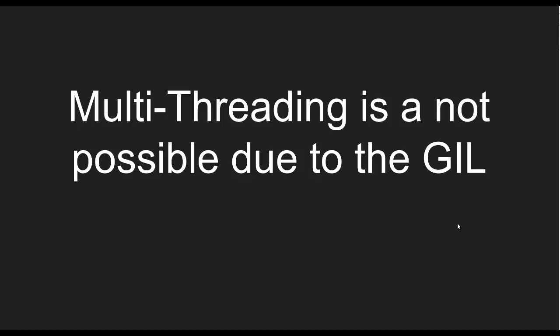This goes back to when Guido was designing the language. He used the GIL to make Python thread-safe because Python's core C-based memory management is not thread-safe at all. Without the GIL, you could have race conditions on multiple threads — Python could be trying to update two pieces of memory at the same time, which breaks your program, crushes performance, and eats up all the memory.